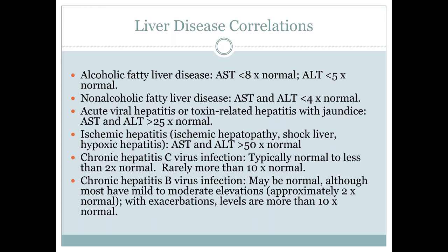In chronic hepatitis, we usually see normal liver enzymes or less than 2 times the upper limits of normal, and they're rarely elevated higher than that. In chronic hepatitis B infection, numbers can be normal but there are usually mild to moderate elevations of approximately 2 times above the upper limits of normal. Interestingly, hepatitis B can be reactivated or cause exacerbations where levels can jump significantly — more than 10 times above normal values.